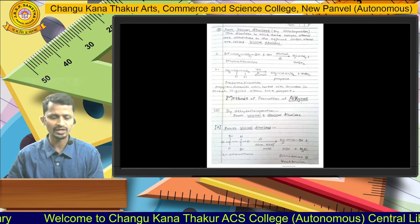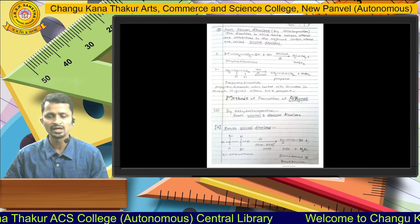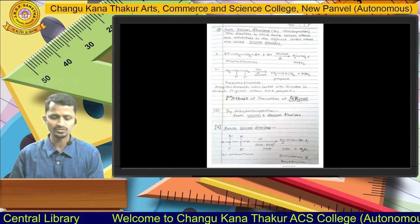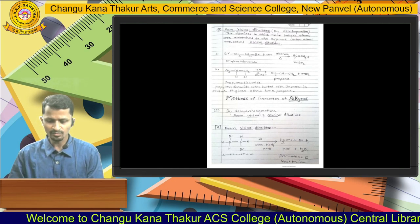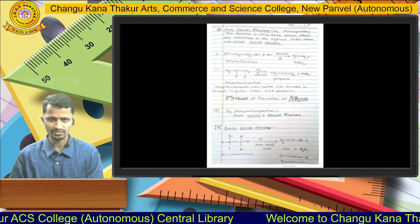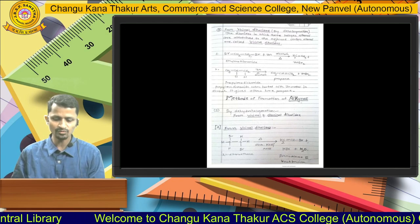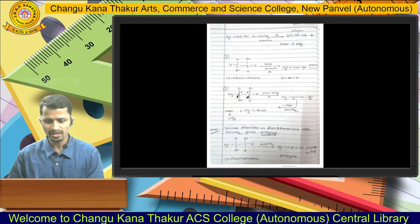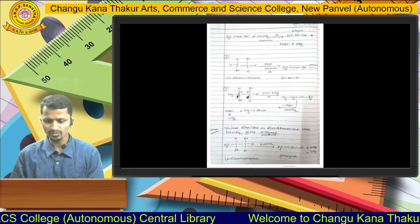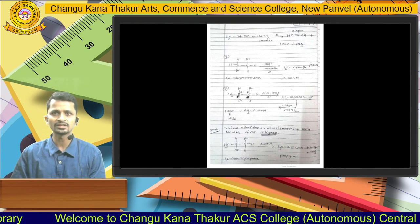The next compound from which you can obtain alkenes is vicinal dihalides. Vicinal dihalides are compounds where two halogen atoms are attached to adjacent carbon atoms. For example, ethylene dibromide treated with zinc in presence of alcohol gives ethylene as the product. Vicinal dihalides can also be treated with alcoholic KOH or NaOH to give alkynes. For instance, 1,2-dibromoethane provides ethane as the product.